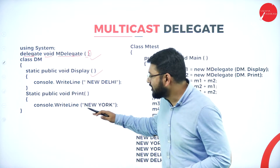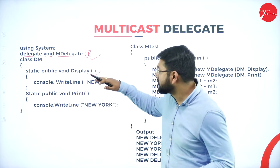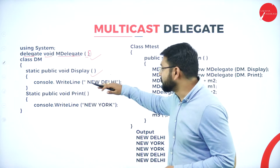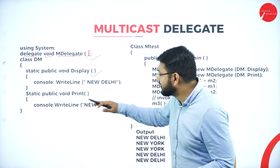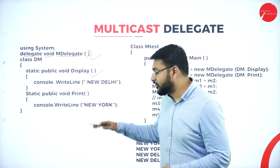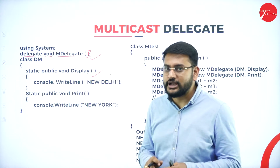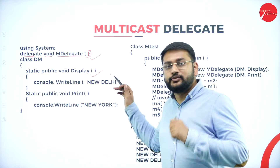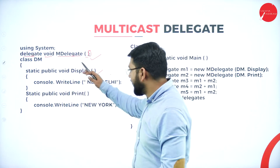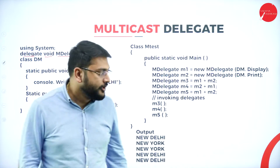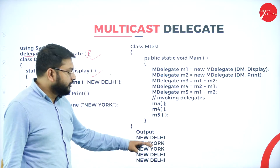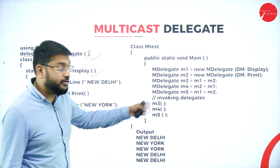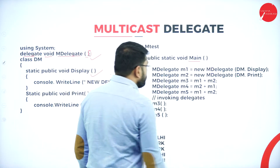We are creating two methods: one is display and another is print. In display, we are printing New Delhi, and in print, we are printing New York. I'm stressing on New Delhi and New York because I'll be discussing the output with respect to these. Then in the main class, we have the main method.